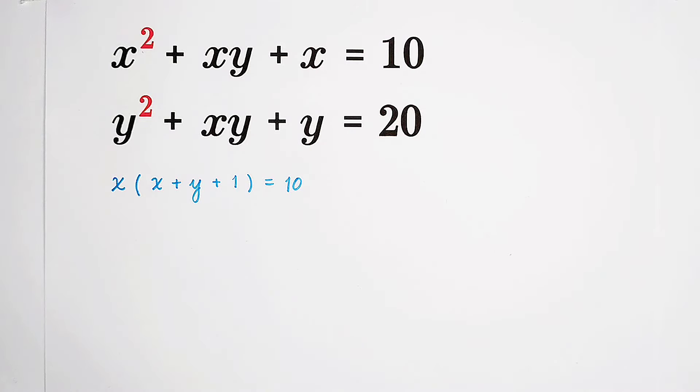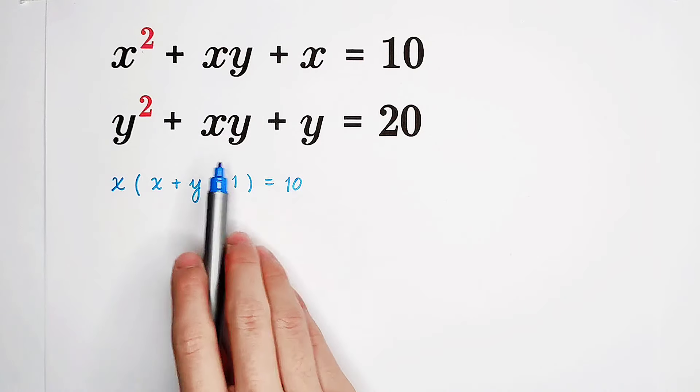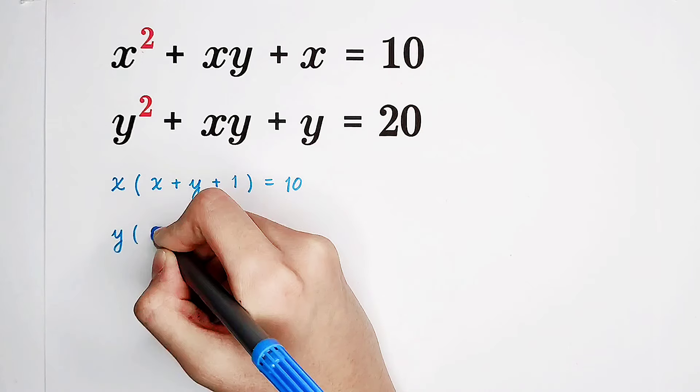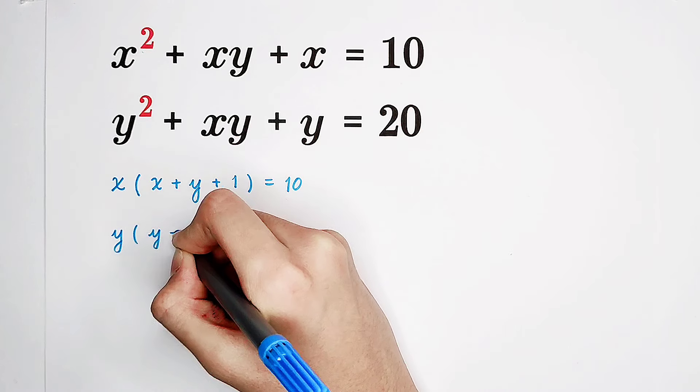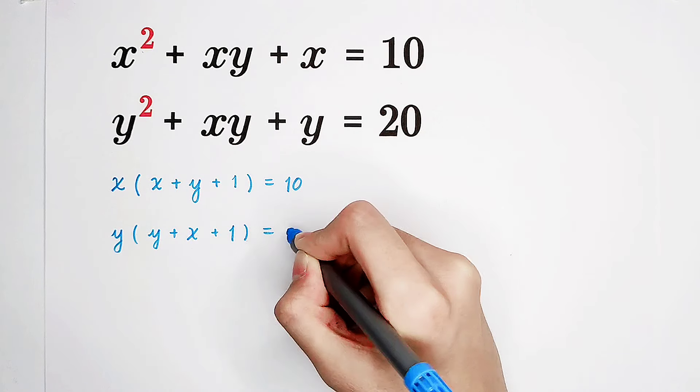In our second equation, we can take out a y on the left side. So it is y times (y plus x plus 1) equals 20.